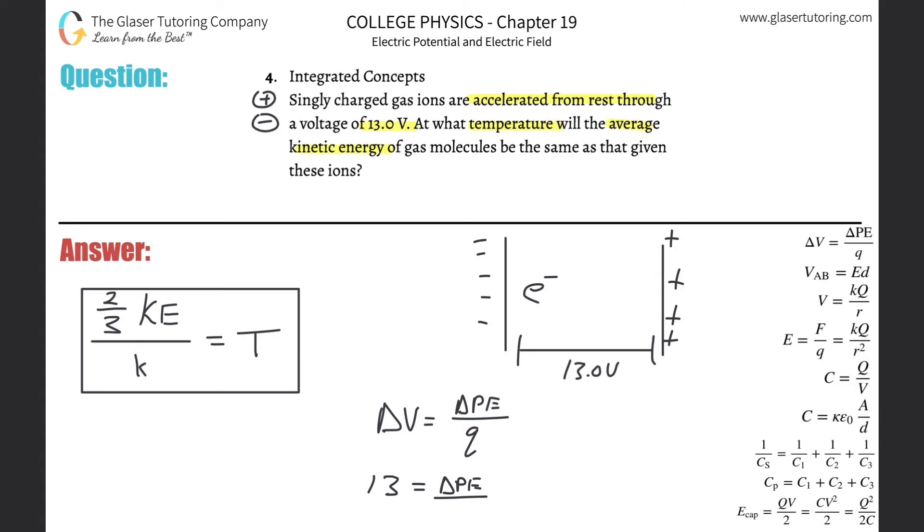And what's Q by the way? It said singly charged. Did it tell us what it was, positive or negative? No. But guess what? It doesn't matter because they're both the same magnitude, 1.6 times 10 to the minus 19 Coulombs.